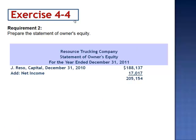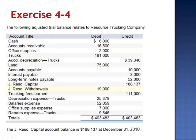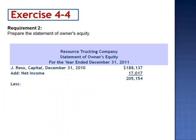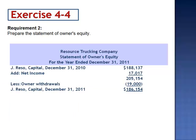Returning to the adjusted trial balance, we see that the balance in resource withdrawals is $19,000. This amount will be subtracted from the $205,154 to calculate the resource ending capital balance of $186,154.